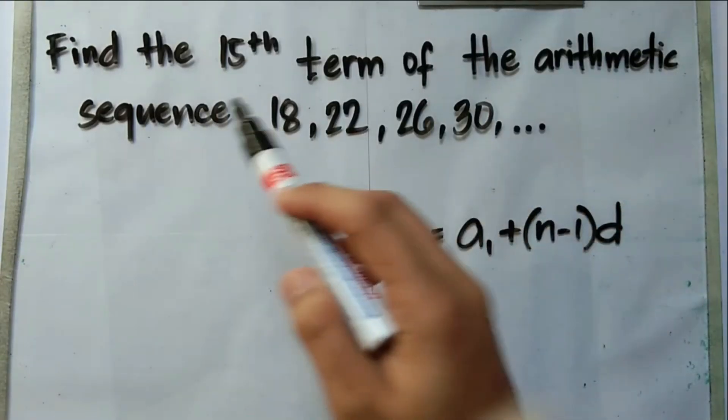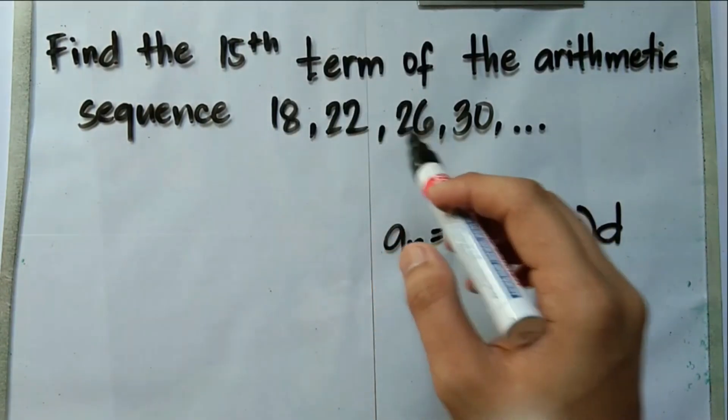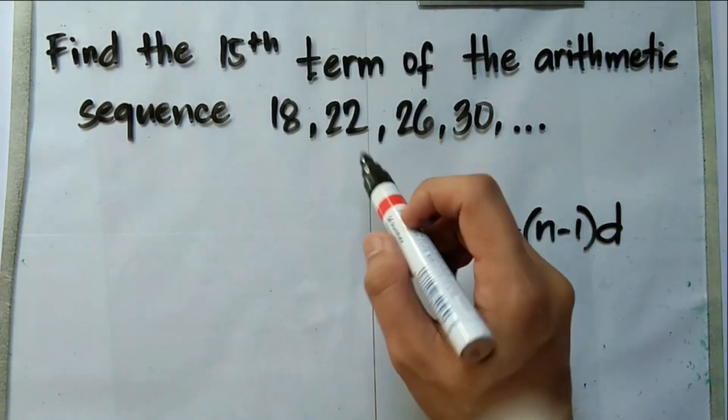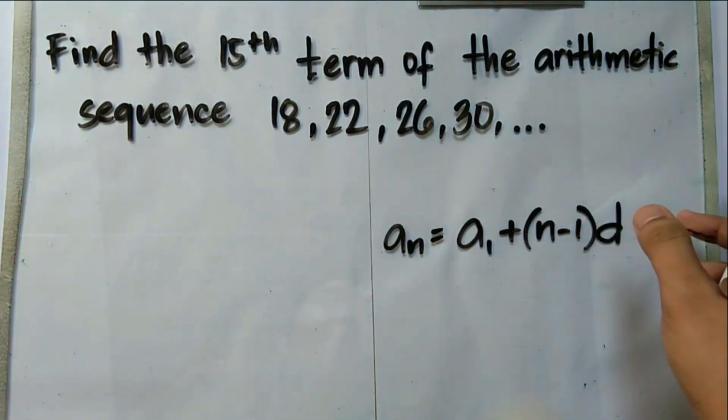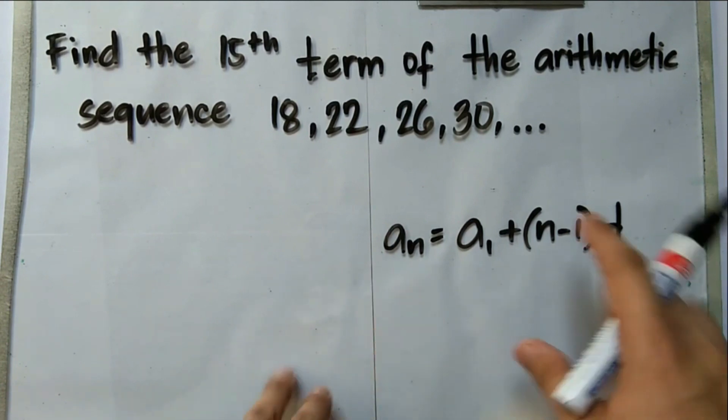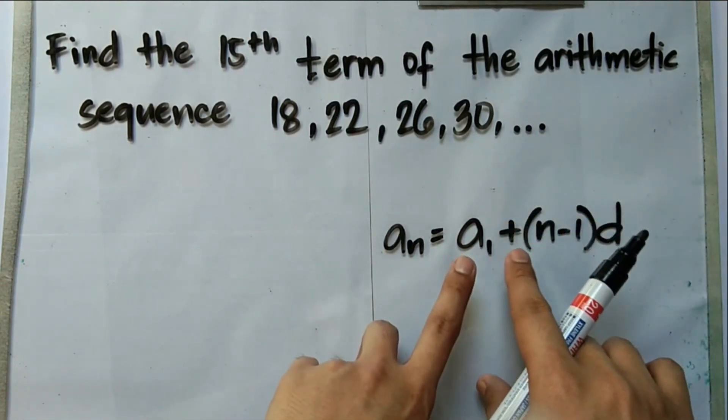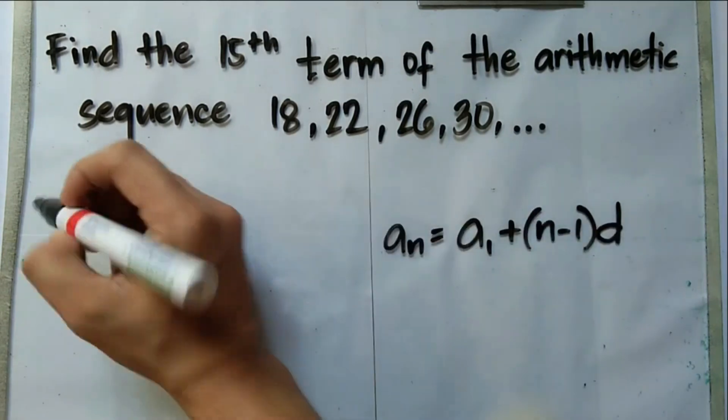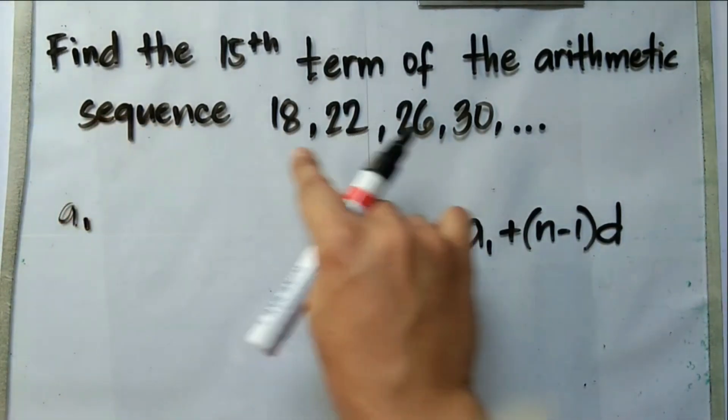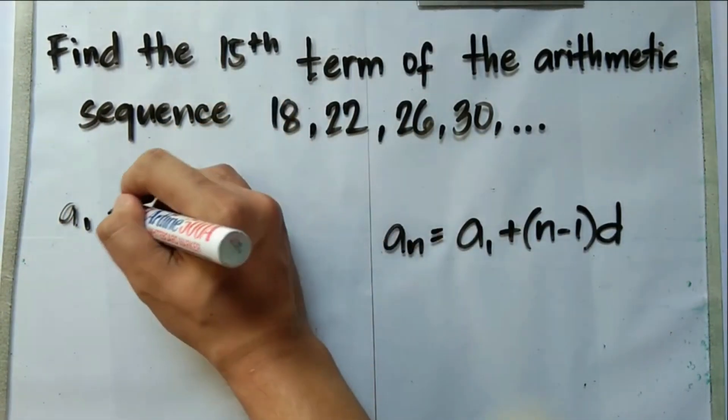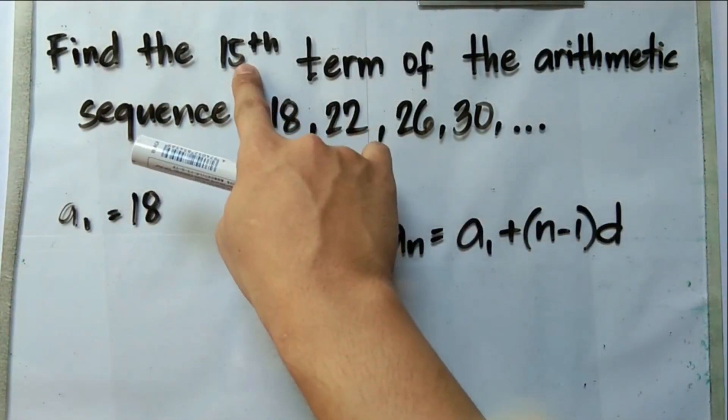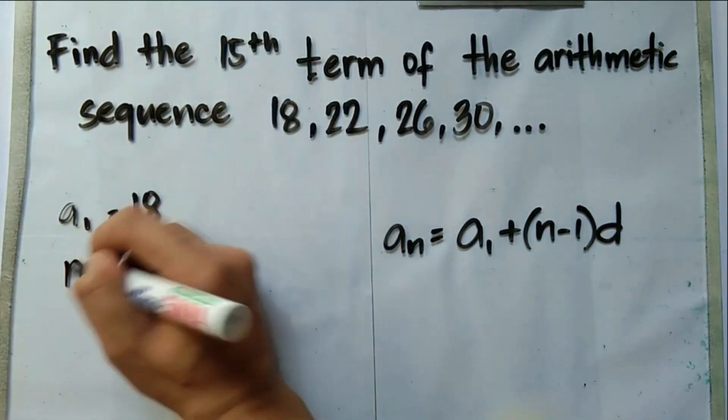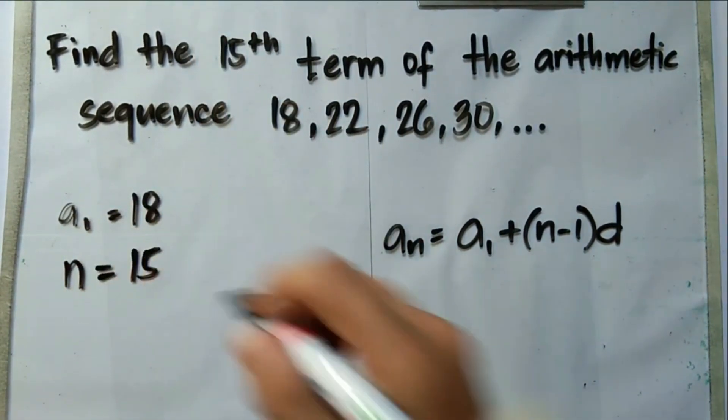So for our first example, find the 15th term of the arithmetic sequence 18, 22, 26, 30, and so on and so forth. Now in order for us to use this formula, or the nth term formula for an arithmetic sequence, first we need to identify what is a₁ or the first term. So in this example, the first term is 18. What is the indicated term or n? So in this case, we're looking for the 15th term. Then therefore, n is equal to 15.